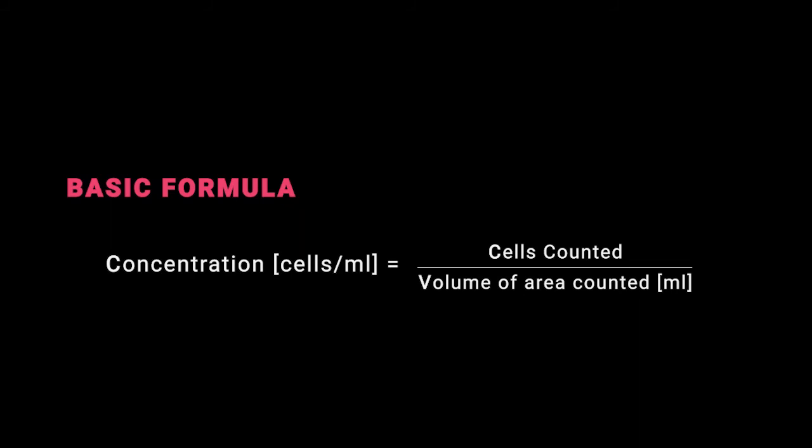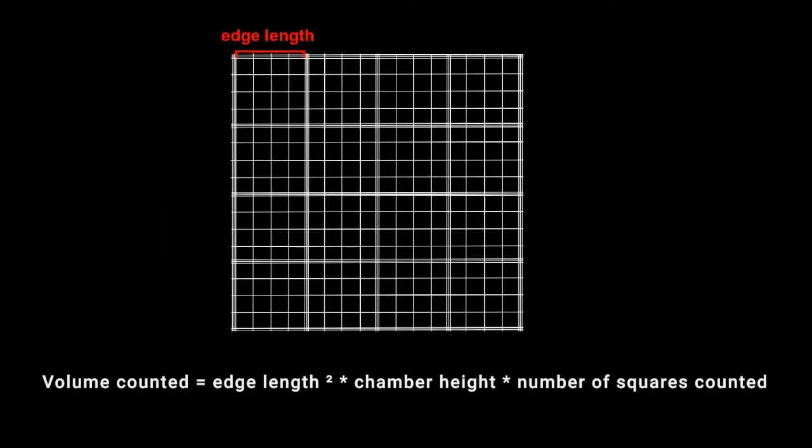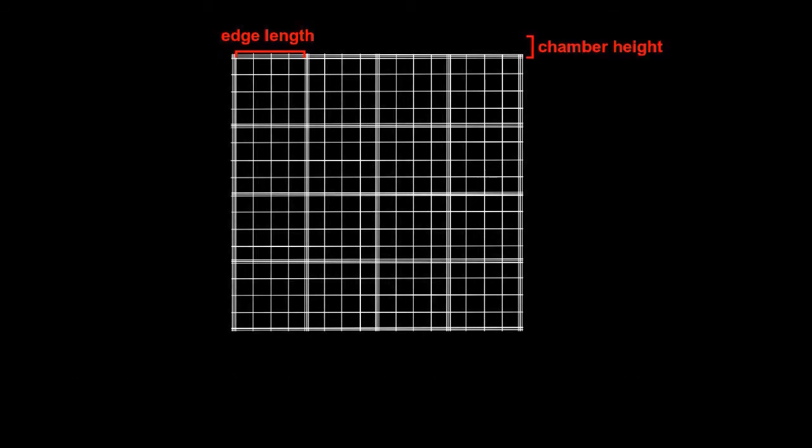The basic formula to determine concentration is dividing the number of cells counted by the volume in which the cells were counted. To calculate the volume take the edge length squared and multiply it by the chamber height. Also consider how many squares were counted. Be mindful not to make a mistake when converting the units. One square millimeter corresponds to one microliter or a thousandth of a milliliter. In general you want to convert the units so the final concentration value is given as million cells per milliliter.